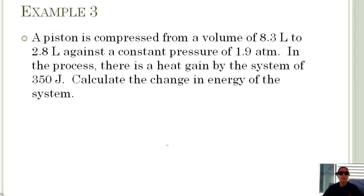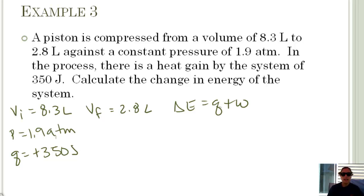A piston is compressed from a volume of 8.3 liters to 2.8 liters against a constant pressure of 1.9 atmospheres. In the process, there's a heat gain, so we're gaining heat. Q equals positive 350. Now I'm going to calculate the change in energy of the system. Delta E equals Q plus W. I have my Q, but I need W. I know that W is equal to negative P delta V. So I need to do this part first, then I can plug in.